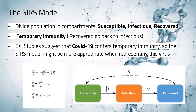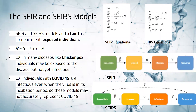The SEIR and SEIRS models add a fourth compartment: exposed individuals. Just like all compartmental models, N is still equal to S plus E plus I plus R. These models denote the rate at which people leave the exposed group and join the infectious group as sigma, where E is the number of people in the exposed group. This is useful for modeling diseases where there's an incubation period and individuals are exposed but not yet infectious.